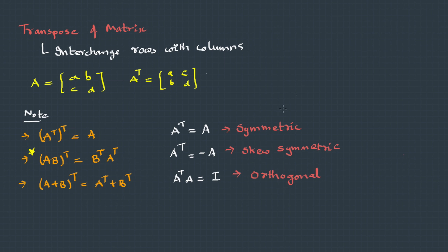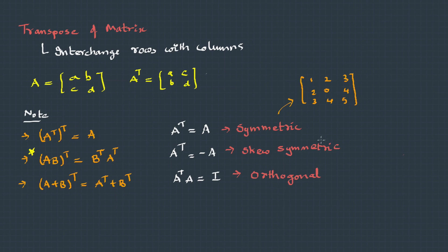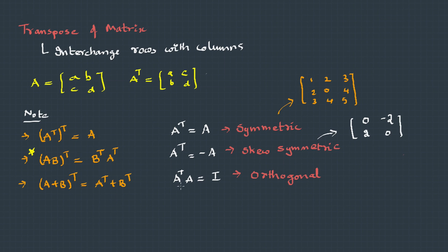For a symmetric matrix, the elements on either side of the diagonal are equal — this element equals that one, and vice versa — so it is symmetric about the diagonal, which is why its transpose equals the original matrix. For skew-symmetric matrices, elements on either side of the diagonal have opposite signs. For an orthogonal matrix, there is no direct shortcut — we must take the transpose and multiply; if the result is the identity, it is orthogonal.